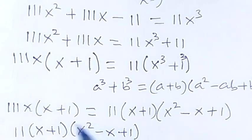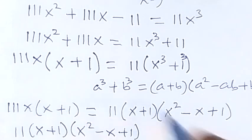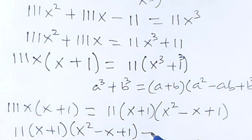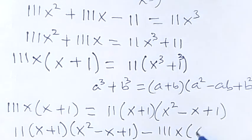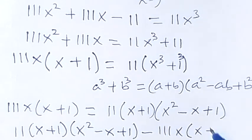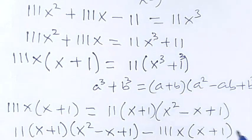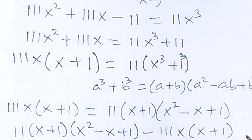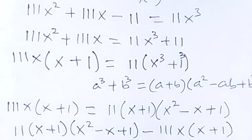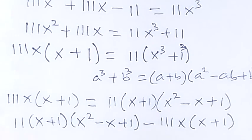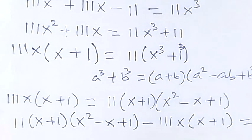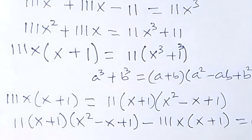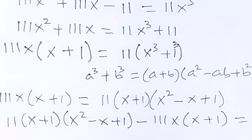When we carry the left term over, we have minus 11x times (x + 1). What is left on this side equals zero, since we have taken everything to one side.